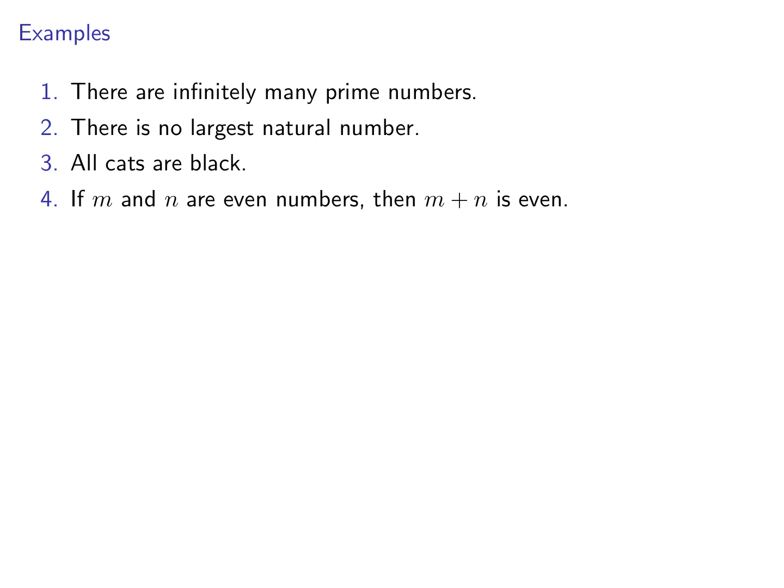Example number three is not strictly a mathematical example, but it is also an instance of a mathematical statement. All cats are black. This is a false statement — well, there are cats with gray color or white, so it is not true that all cats are black. But it has a truth value, this statement, and hence it's a mathematical statement.